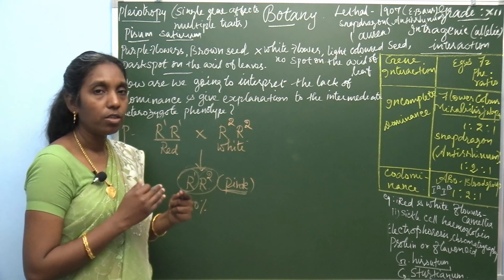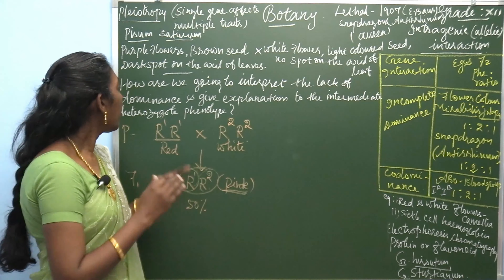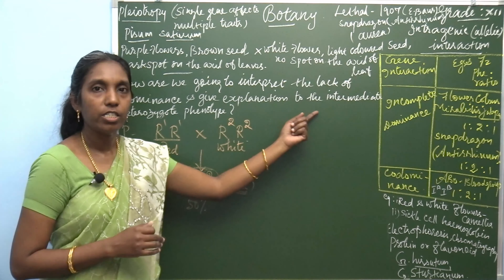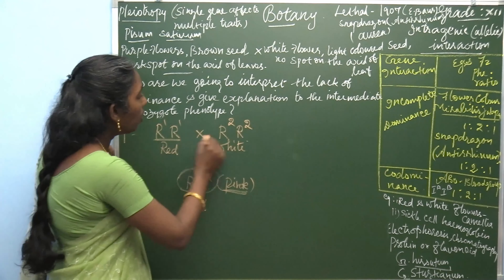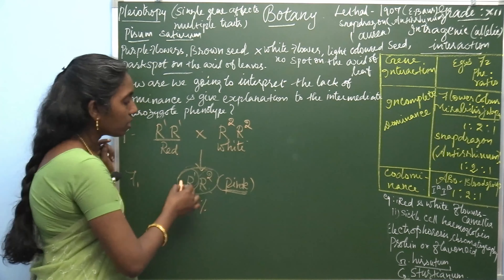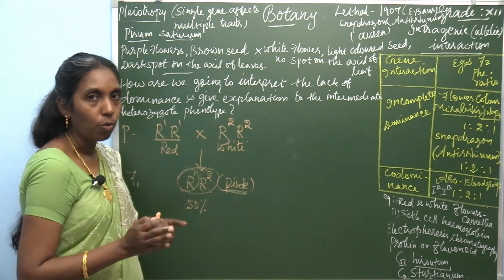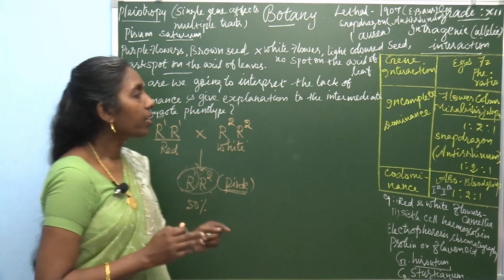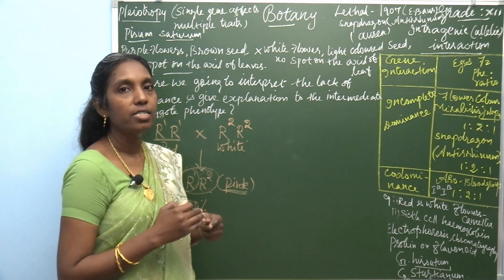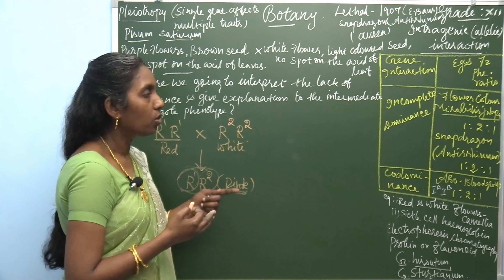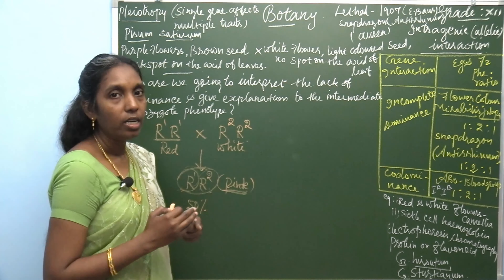So the first question you are going to learn is: how do we interpret the lack of dominance and explain the intermediate color of the heterozygote phenotype? The two homozygous and one heterozygous give the ratio 1:2:1. The same phenomenon is found in snapdragon, also called Antirrhinum, which also gives the 1:2:1 ratio.